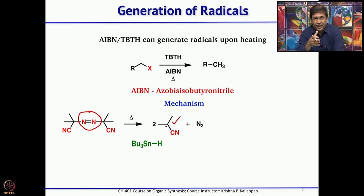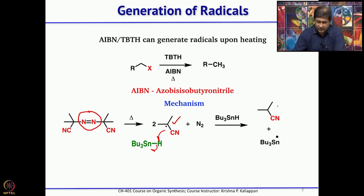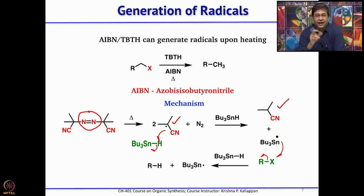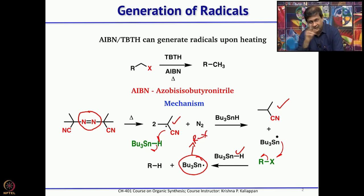Since you add tributyltin hydride — 1 to 1.1 equivalents — to the reaction mixture, the radical will immediately abstract the hydrogen of tributyltin hydride forming the corresponding tributyltin radical, and the AIBN becomes simple butyronitrile. The tributyltin radical will then react with your alkyl halide to form tributyltin halide and an alkyl radical. That alkyl radical picks up hydrogen from tributyltin hydride to form RH, and the cycle continues.